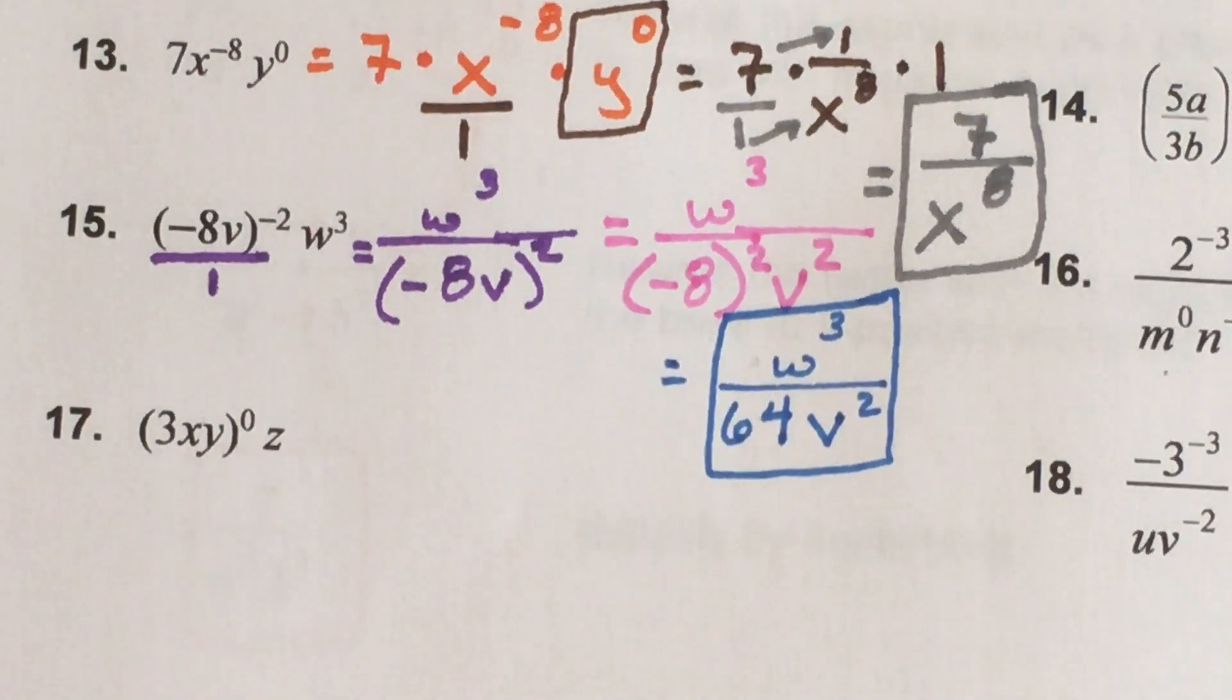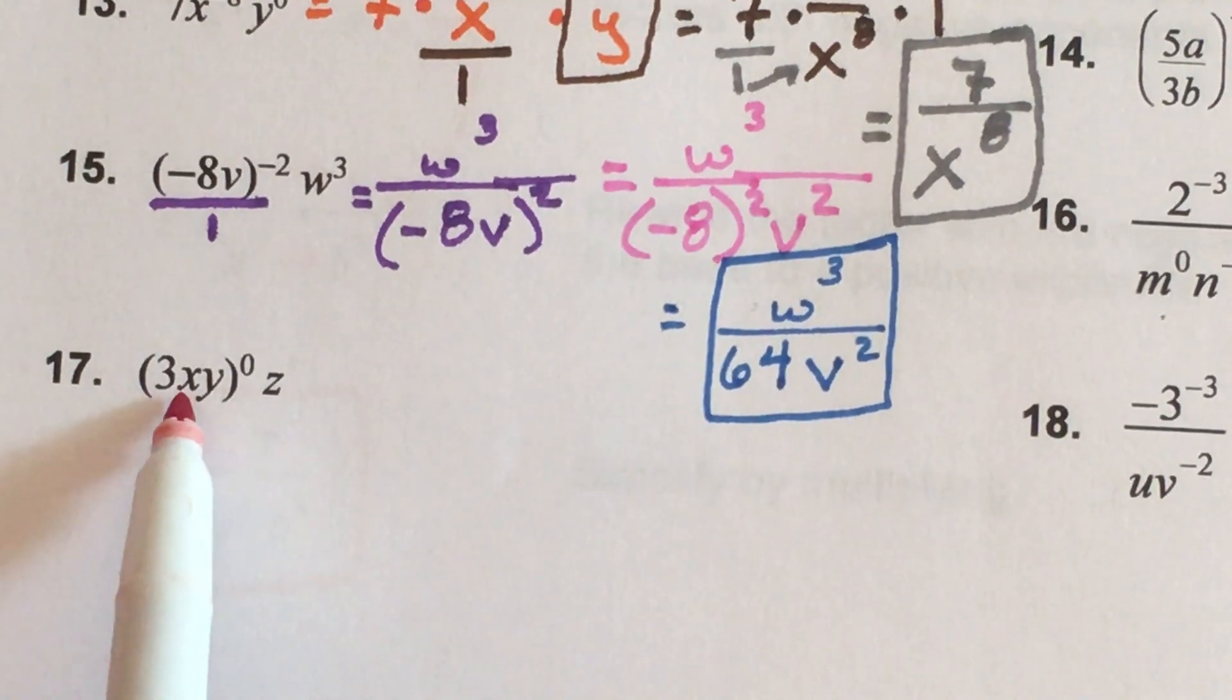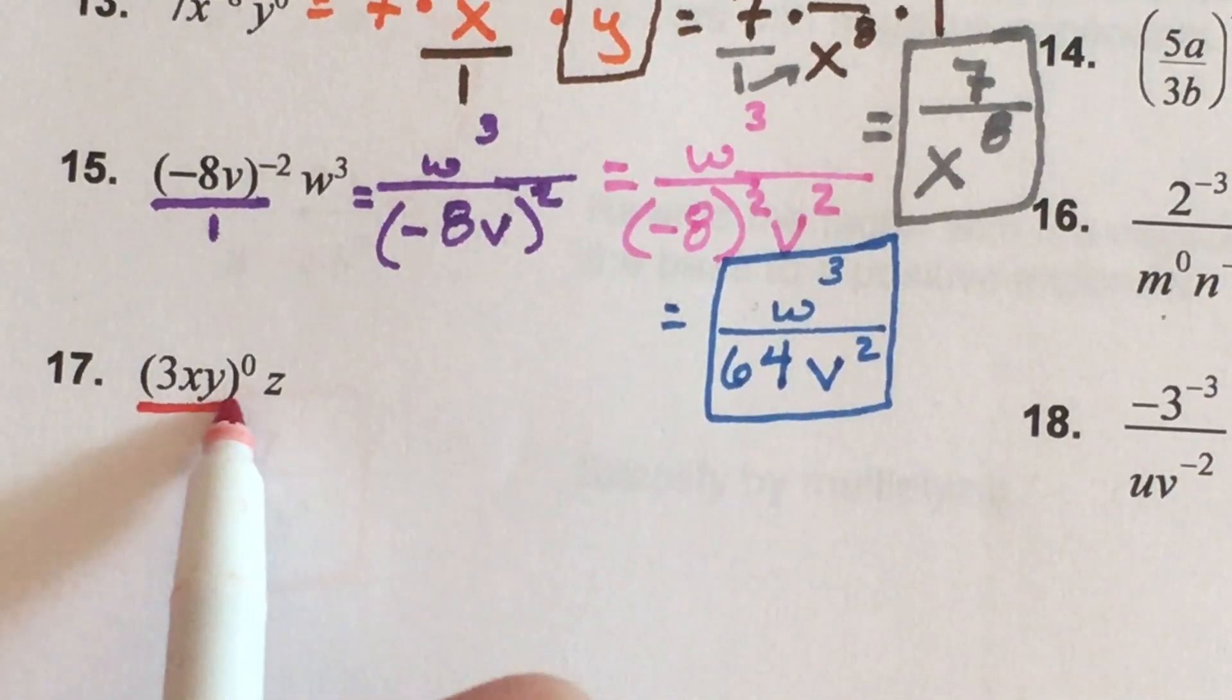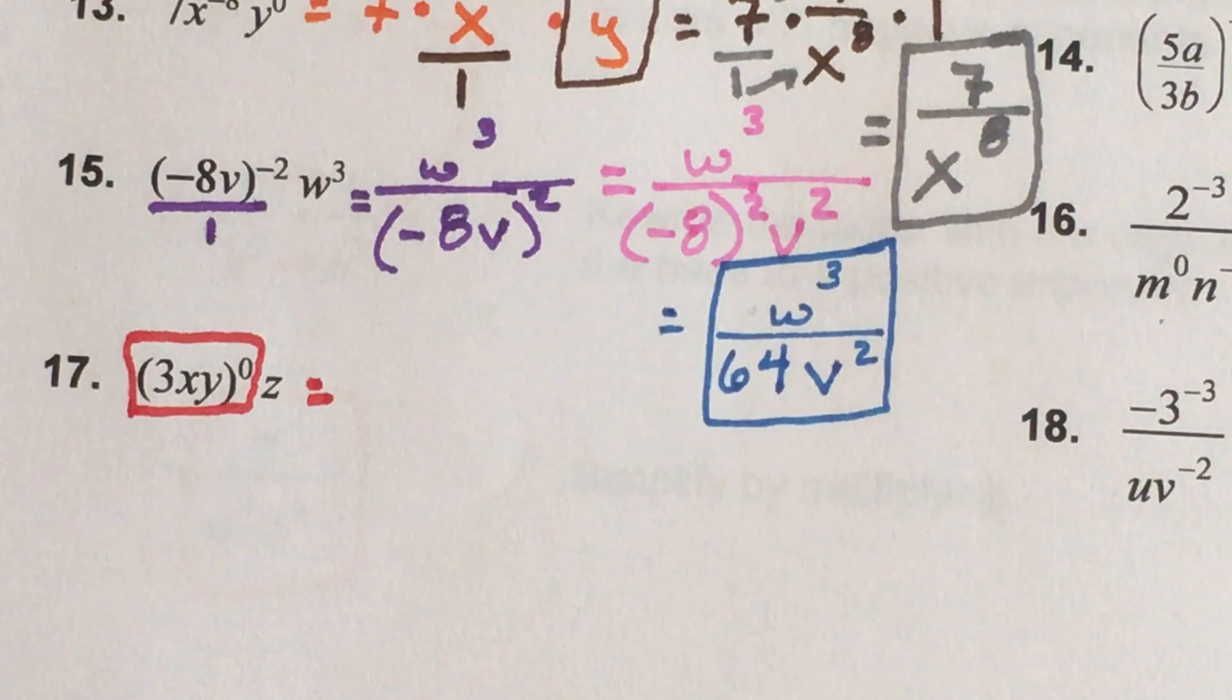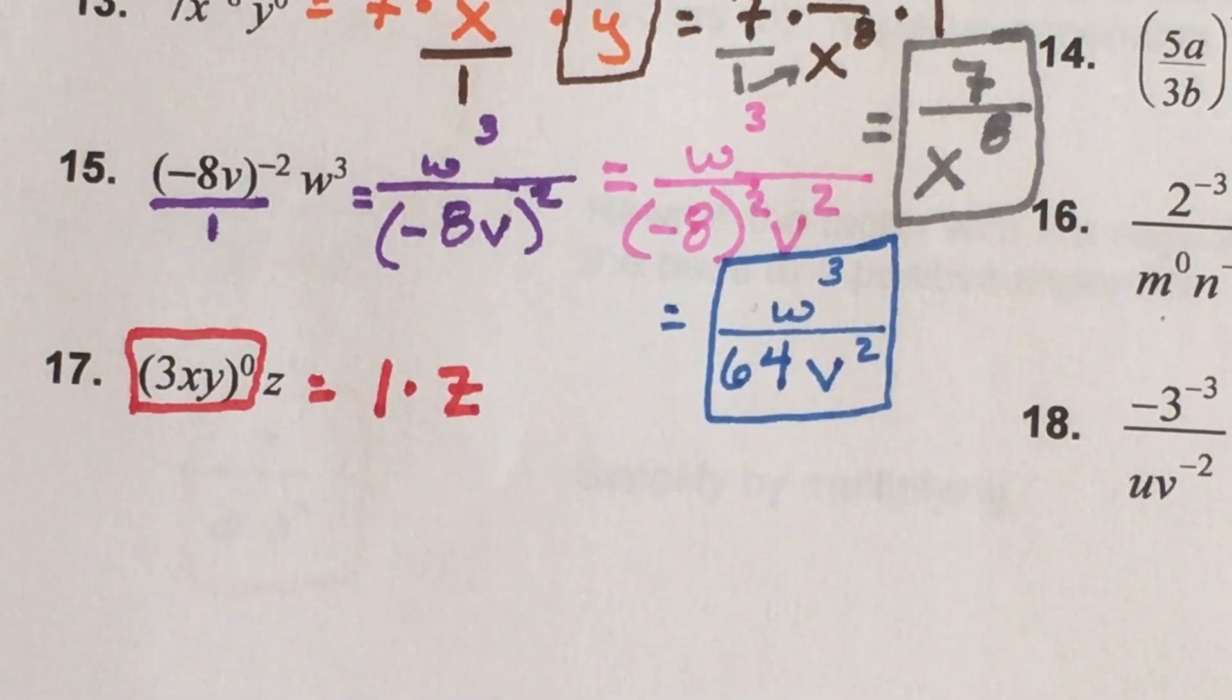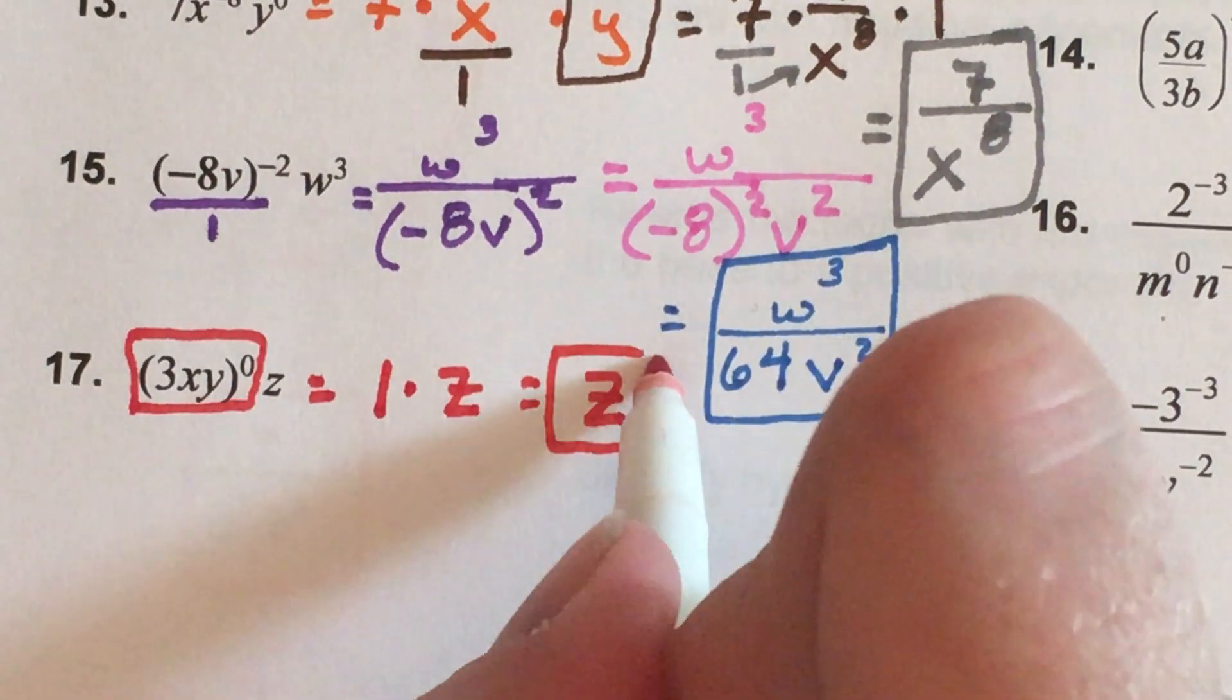Number 17. What do I have in parentheses? Three times x times y and all of that is to the zero power. So all of this is honestly truly worth what? It's one times z that is waiting patiently. So what's one times z? z, and it's finished.